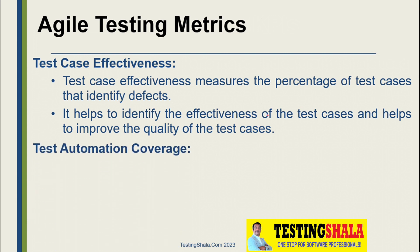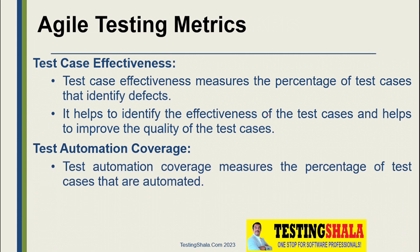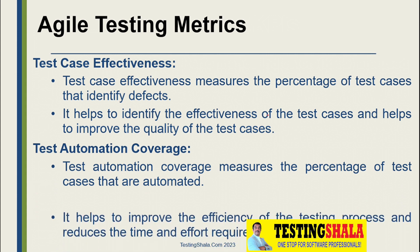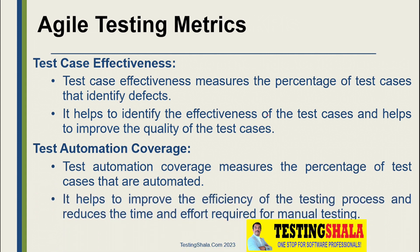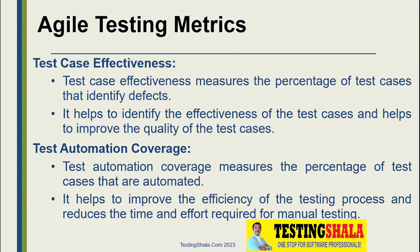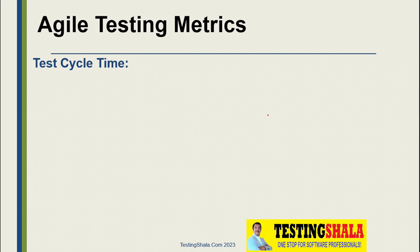Test automation coverage is also a key metric, measuring what percentage of test cases are automated. If we measure this properly, it helps us bring efficiency into the overall testing process. We can also drive more automation across our test cases, which in turn reduces the overall time and effort of executing test cases via manual testing.